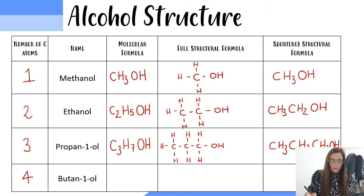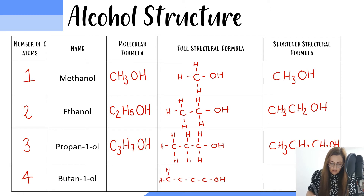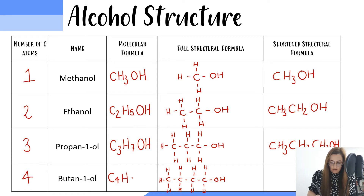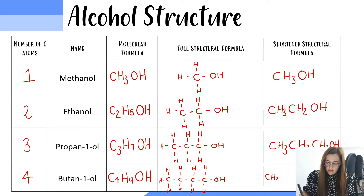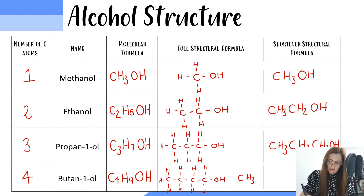The fourth member, butan-1-ol, has four carbons and our hydroxyl group at the end. We fill in each carbon with hydrogens to make sure it has four bonds. The molecular formula has four carbons, nine hydrogens, and our hydroxyl group at the end. The shortened structural formula: the first carbon has three hydrogens, the second carbon has two hydrogens, the third carbon has two hydrogens, the fourth carbon has two hydrogens, and then our OH at the end.